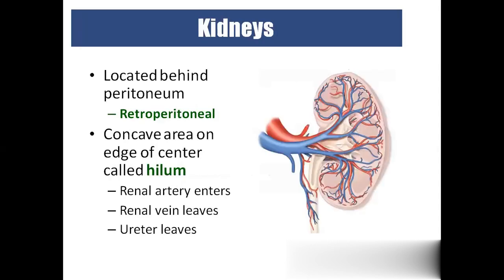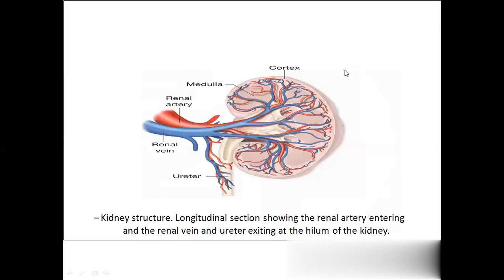The kidneys are located behind the peritoneum — that is why we call it retroperitoneum. The kidney has a convex side and a concave side. The concave region is the hilum, through which the renal artery enters, the renal vein exits, and the ureter comes out. In a labeled diagram, the outer part of the kidney is called the cortex — the renal cortex. The inner part is the renal medulla. The hilum contains the renal artery, renal vein, and ureter.